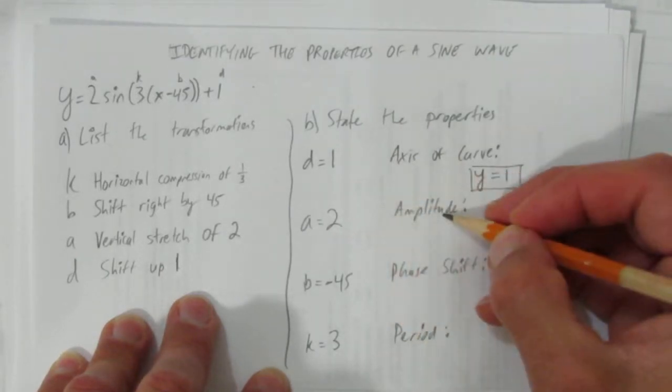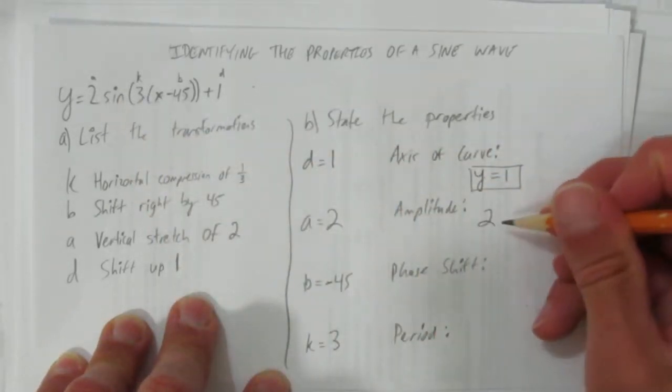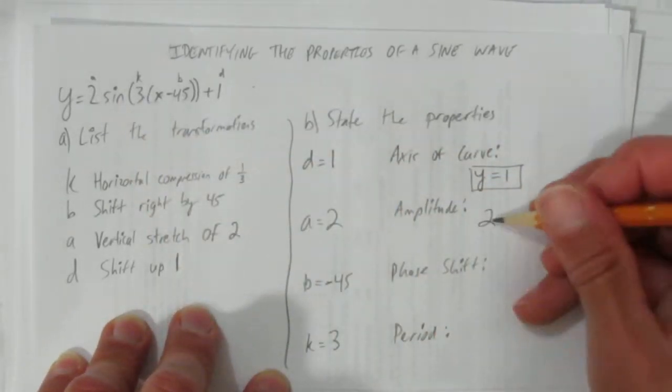The amplitude. That's just the height of the waves. And it's given by the a value. So whatever the a is, that's the amplitude. Not an equation. Just a number. Two. The height of the waves are two.